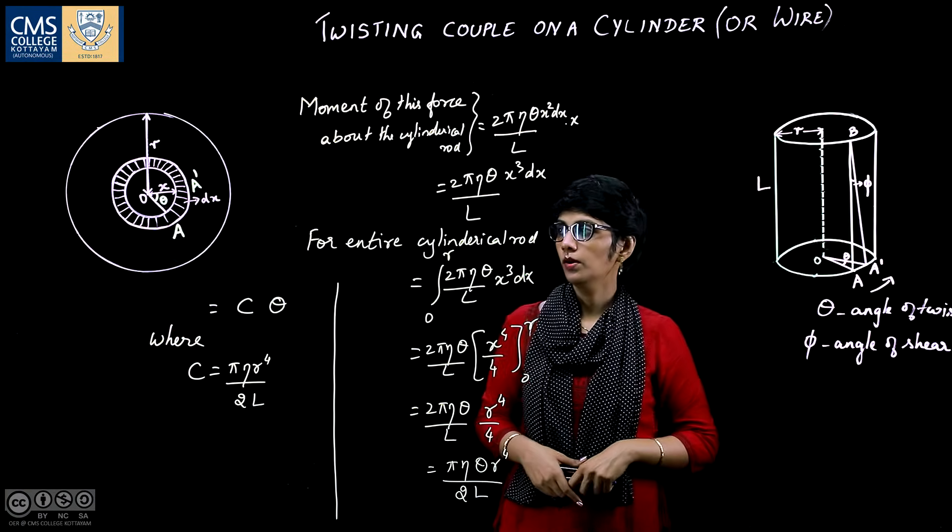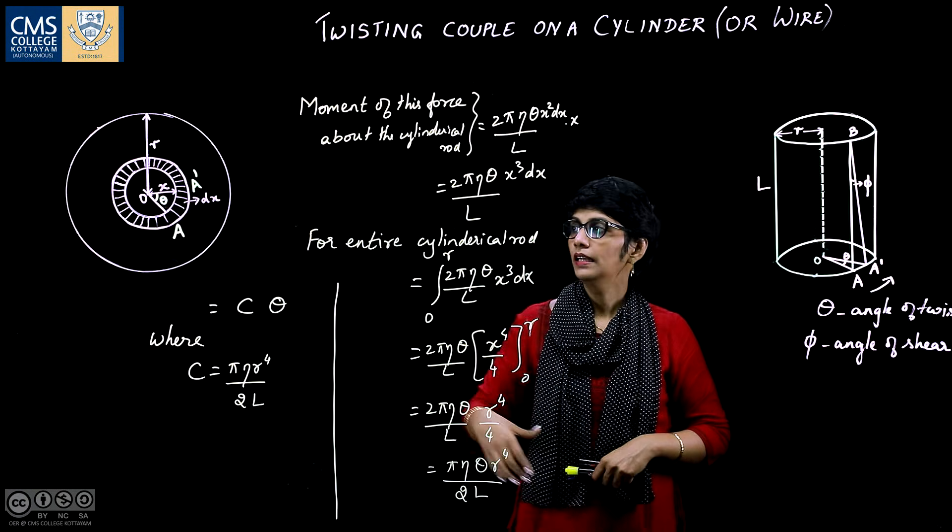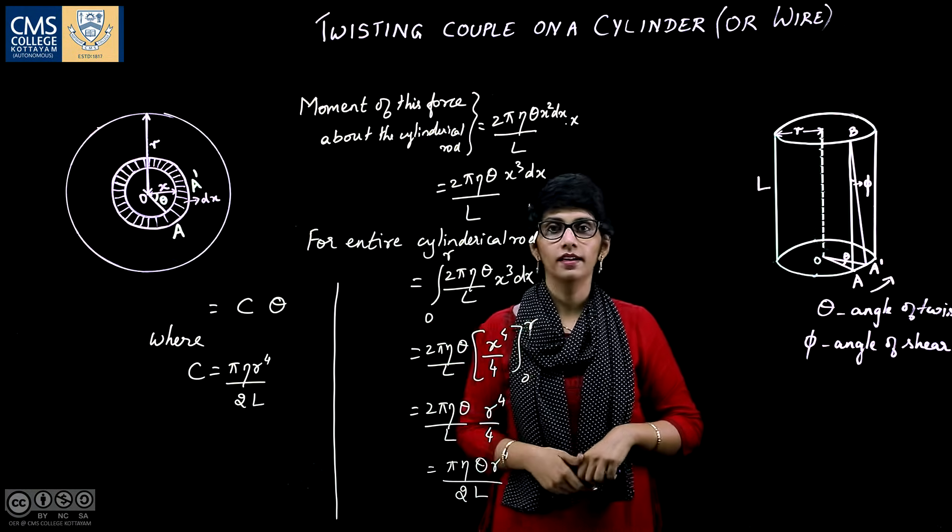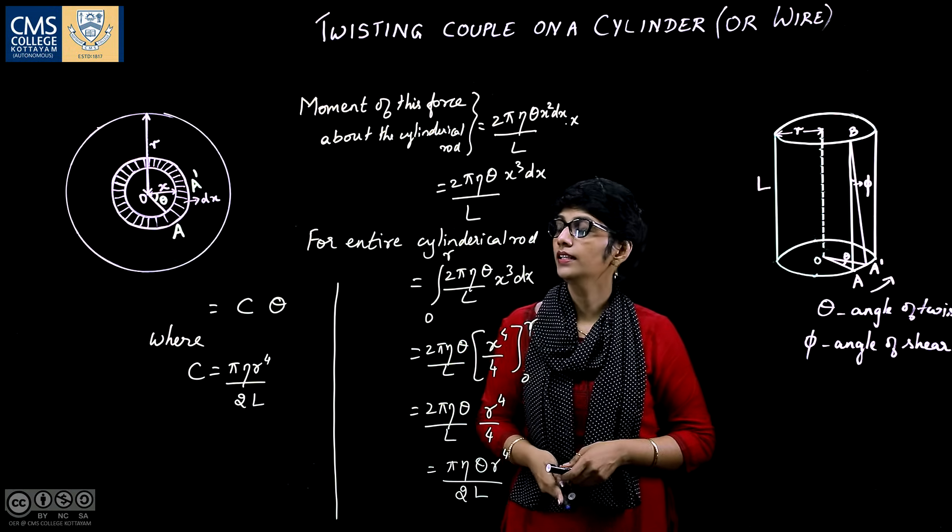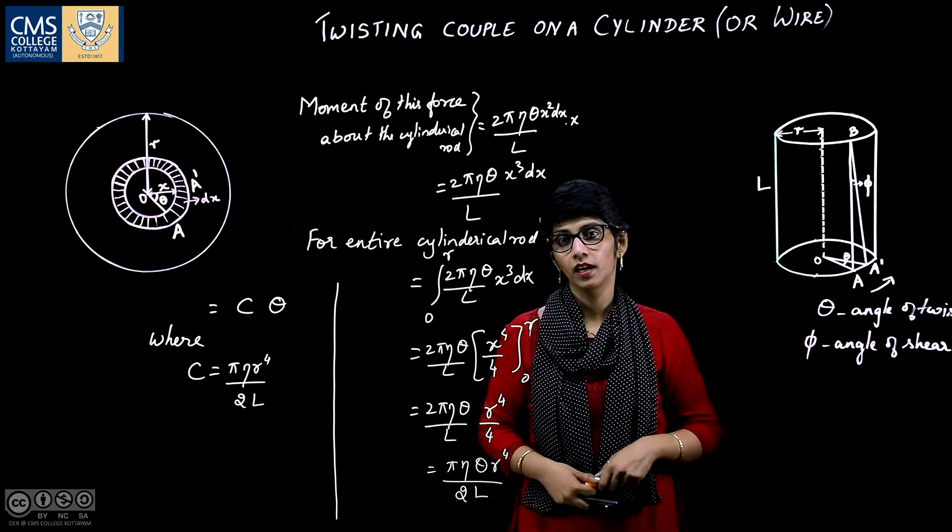If the cylinder is hollow, then it will be having internal and external radius. Let internal radius be r1 and external radius be r2.